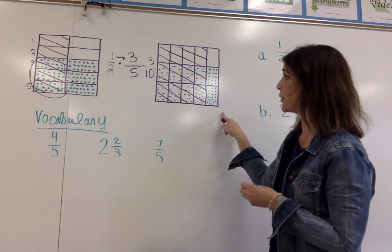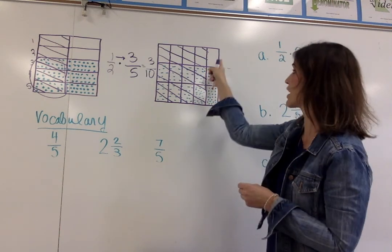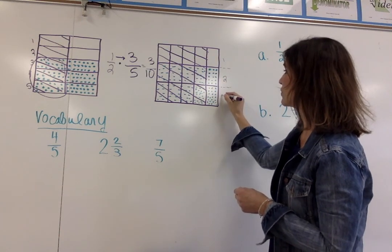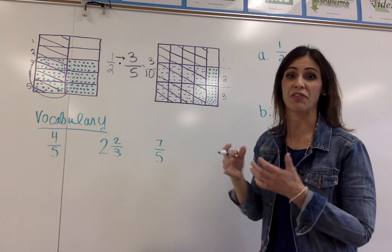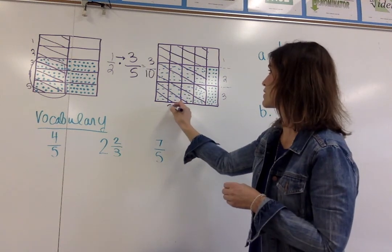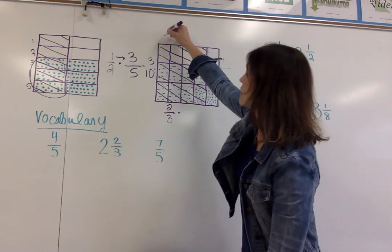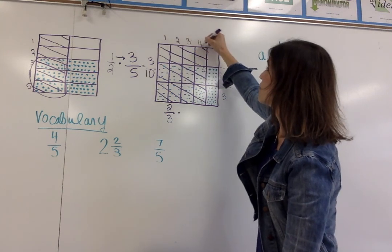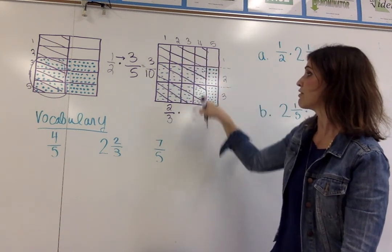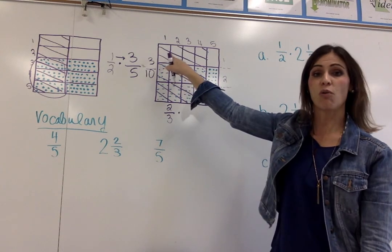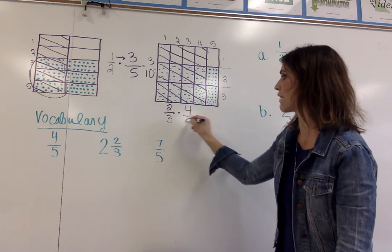In our next example, we can see that the square is split into three sections horizontally, and two of those are marked in with the dots. So my first fraction is two-thirds. Then I can see my vertical lines divide the square into five sections, and four of those sections are marked with the diagonal lines. So my second fraction is four-fifths.